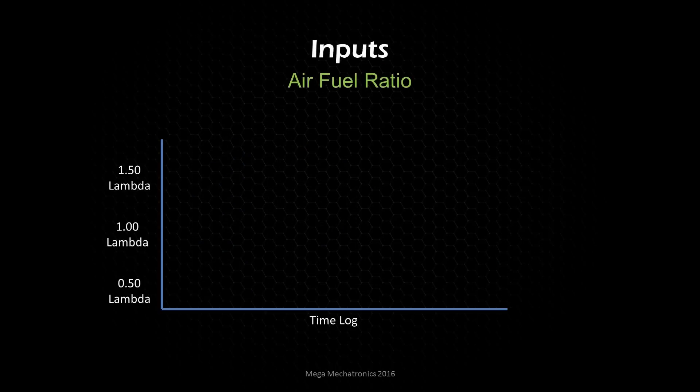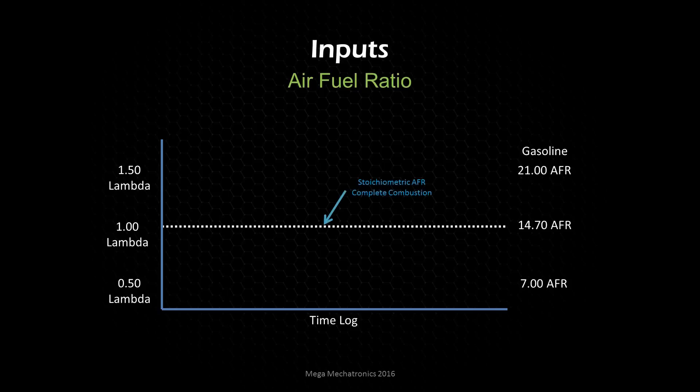Let's get deeper into air-fuel ratios. On the vertical axis of this chart, we have our lambda readings. Lambda 1.5 is really lean, Lambda 0.5 is really rich, and Lambda 1.0 is stoichiometric. Gasoline is shown on the other side for reference. In the very middle is our stoichiometric air-fuel ratio — the chemically perfect ratio to achieve complete combustion.